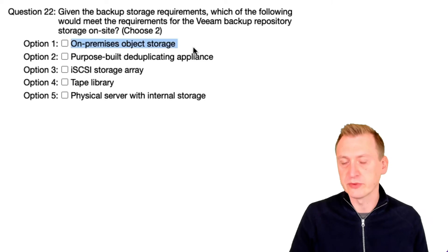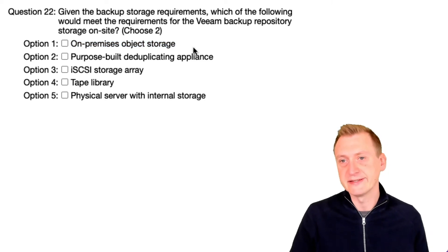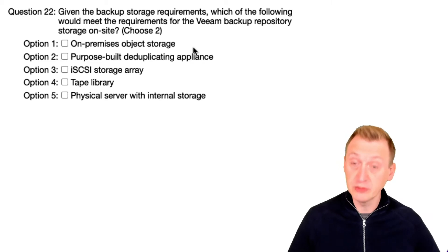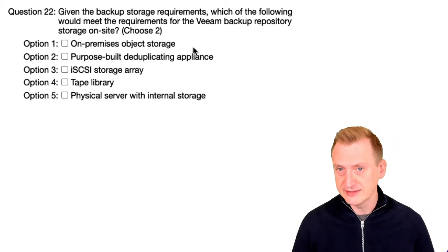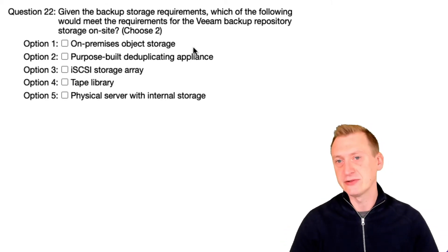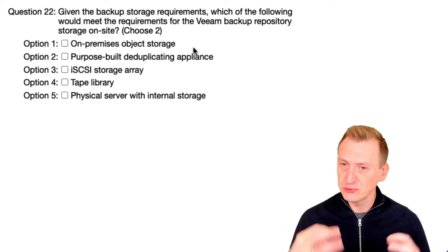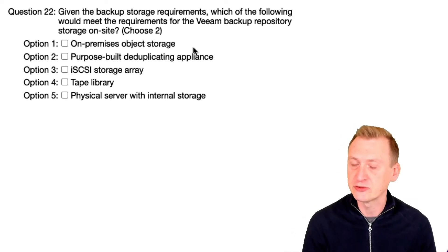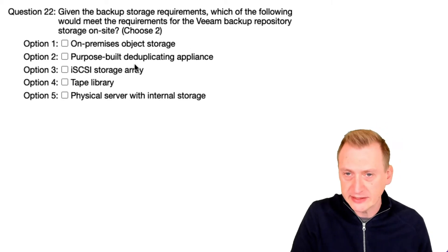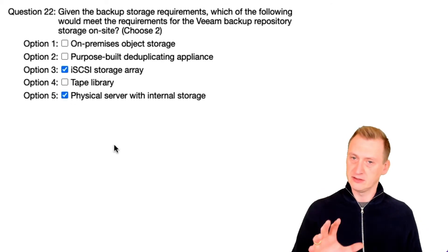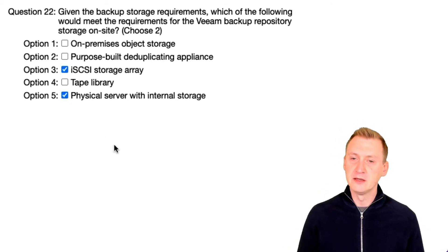On-premise object storage doesn't work for a Veeam repository — it could be used as a capacity tier, but we can't do backups directly to object storage or use it as a repository per se. So if we can't use four, two, and one, we're basically left with three and five. Let's do a sanity check.